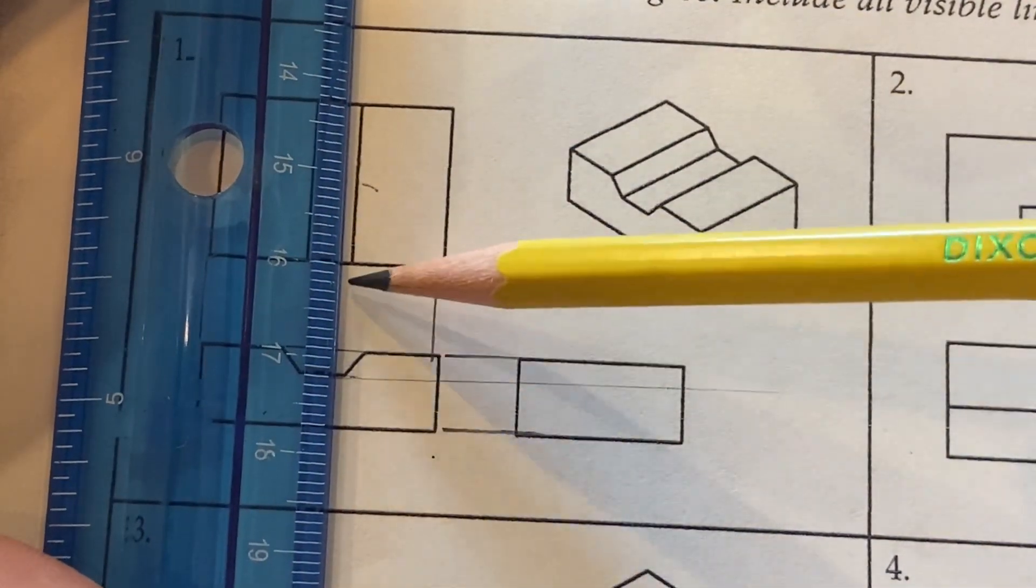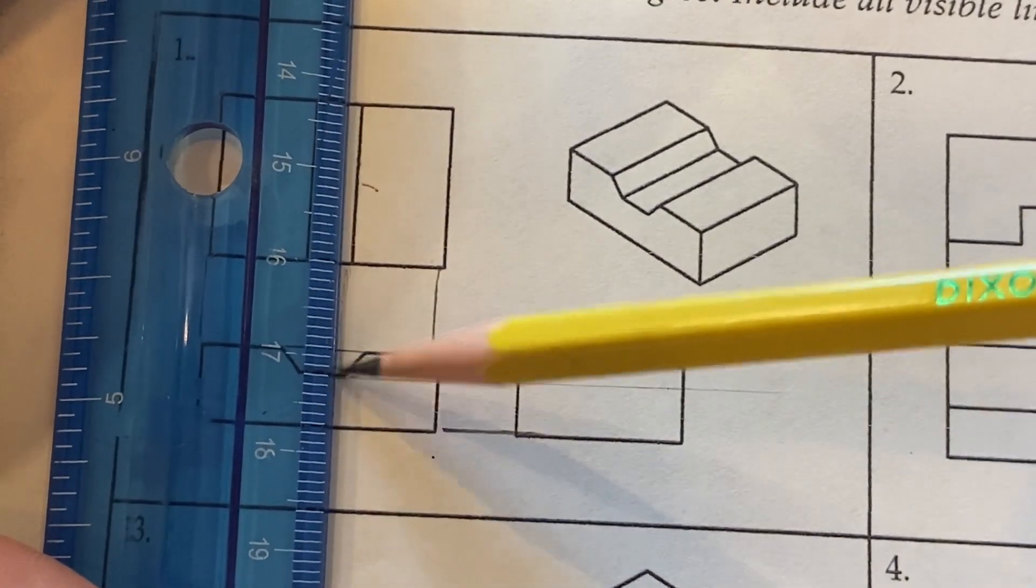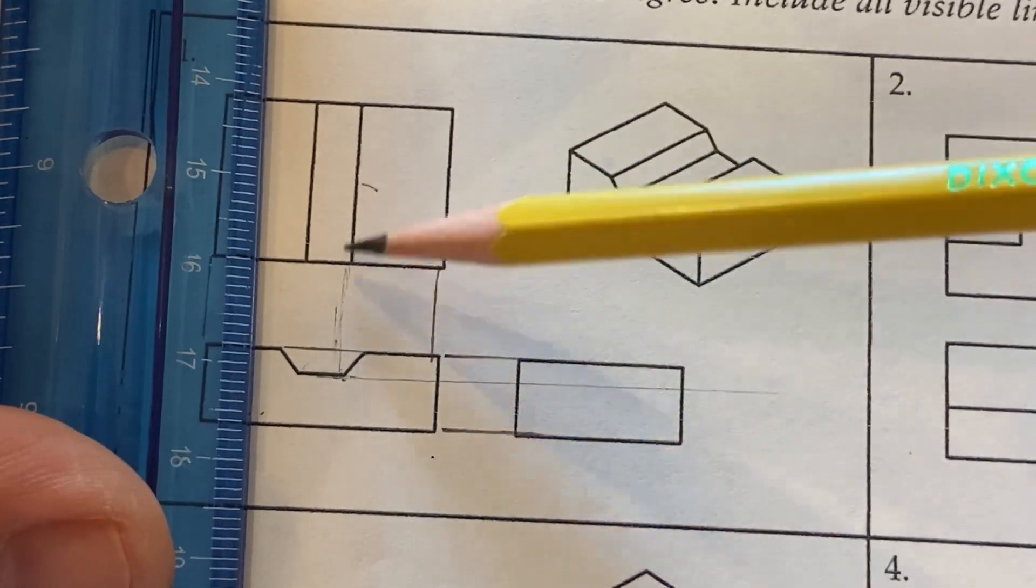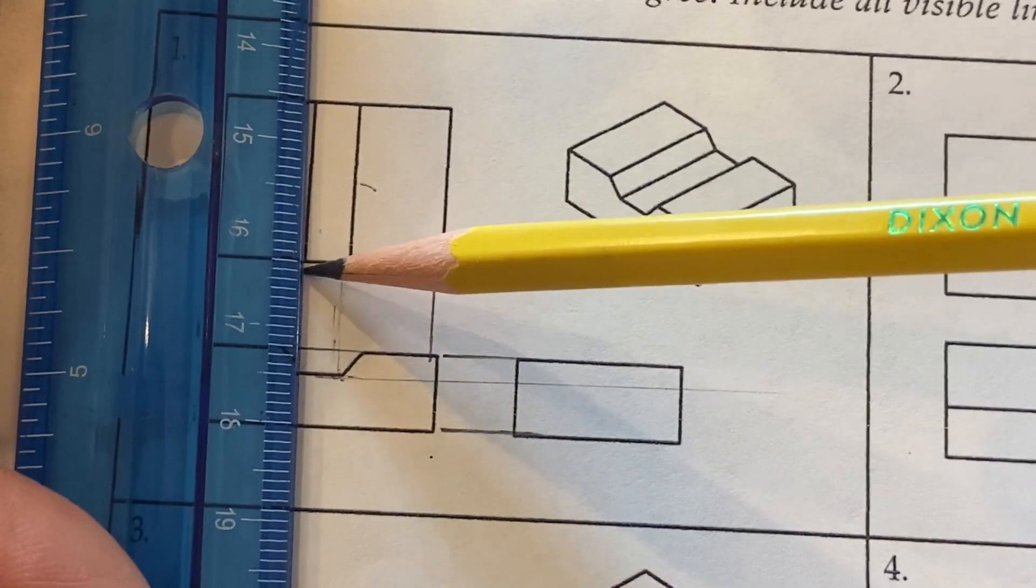when we project that up, we see that that point here in the front view aligns and correlates with the line that we see in the top view and the same thing over here as well.